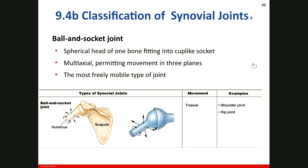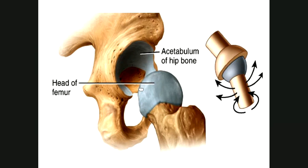The last type is the ball-and-socket joint — a multiaxial joint in which the spherical articulating head of one bone fits into a rounded, cup-like socket of the second bone. Examples are the coxal (hip) and glenohumeral (shoulder) joints. The multiaxial nature permits movement in three planes, making this the most freely mobile type of synovial joint and, correspondingly, the least stable joint in the body.